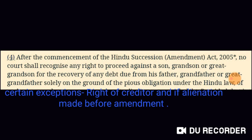Section 6 also recognizes that any right to proceed against a son, grandson, and great-grandson for recovery of any debt due from his father, grandfather, and great-grandfather. This refers to the Pious Obligation concept — the debt from ancestors must be repaid. However, this amendment ended that obligation, meaning you can no longer recover from your sons or great-grandsons. The previous pious obligation concept was abolished, with only certain exceptions, such as the right of a creditor for obligations arising before the amendment.